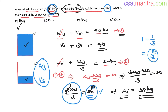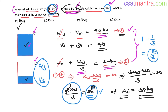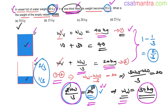The answer is option A. The problem is very simple — divide and rule. First sentence: vessel plus water weight = 40 kg. Second sentence: vessel weight stays the same, water weight becomes one-third, total = 20 kg. Two equations, two unknowns. Subtracting gives weight of water = 30 kg, since two-thirds of water weight equals the 20 kg decrease.